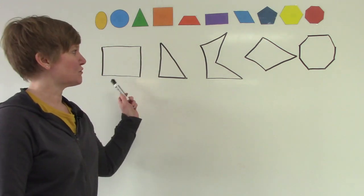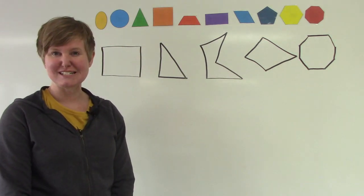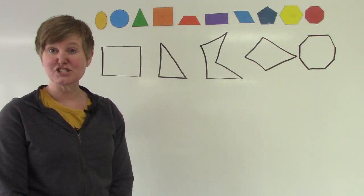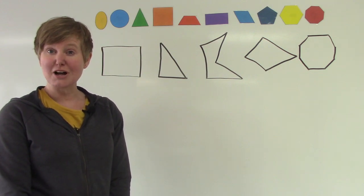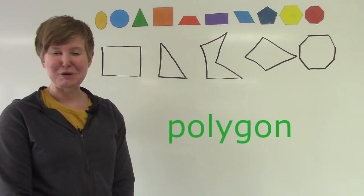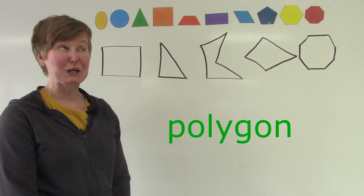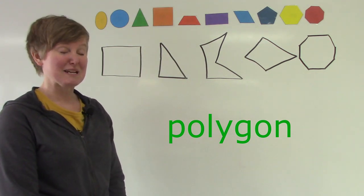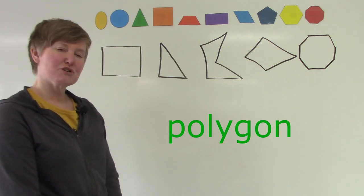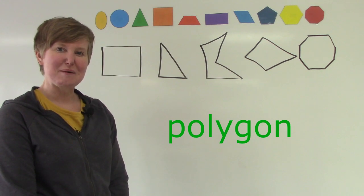I've also drawn some shapes on the board here today, and all of these shapes are polygons. Polygons are enclosed shapes that have many sides. I wonder if you already know the names of some of them.